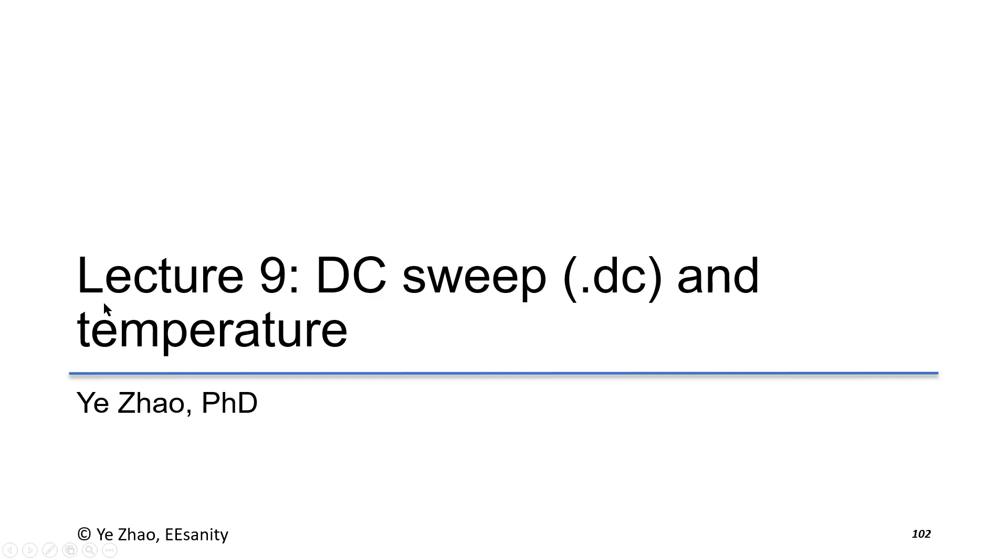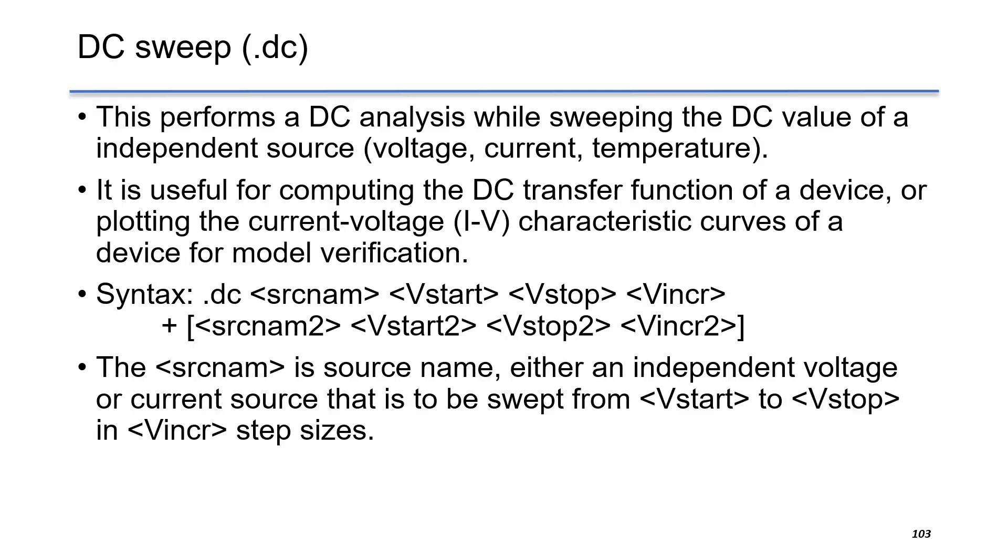In this lecture, we will discuss the DC sweep and temperature in LT SPICE. DC sweep is a method in SPICE to vary a DC value of independent source, such as voltage, current, or temperature.